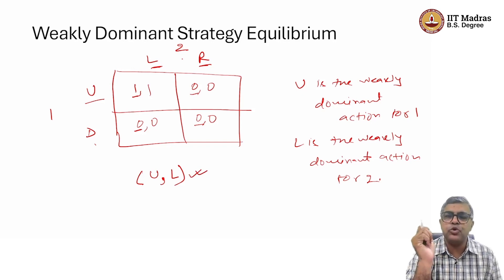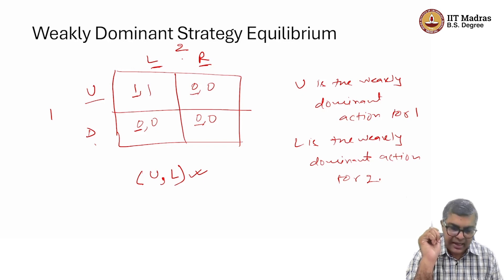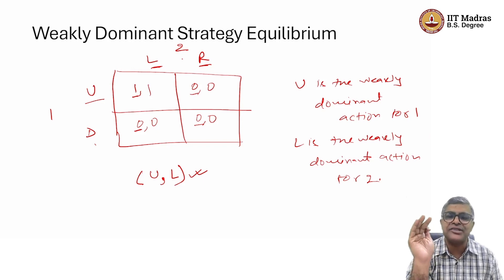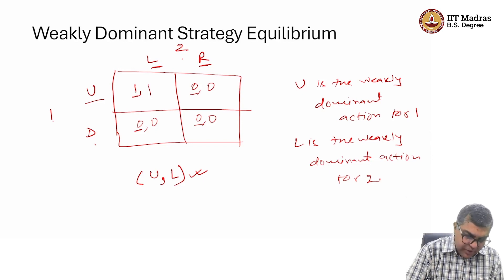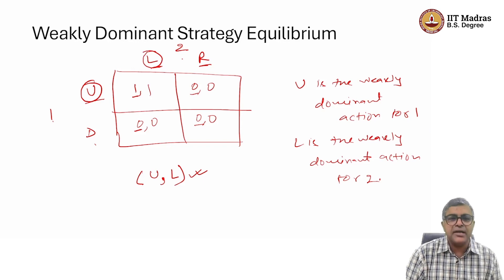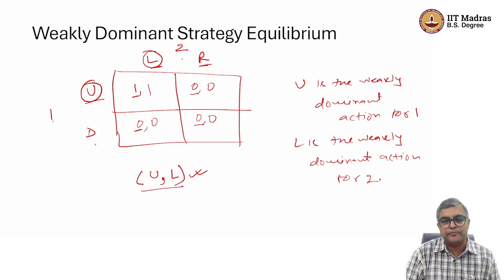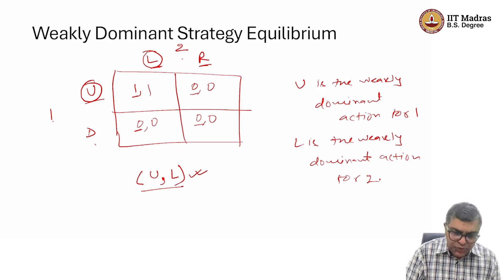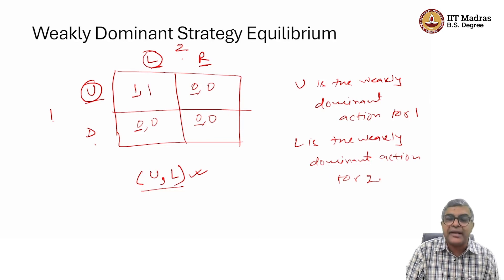Before we proceed further, we should note what kind of assumptions we have used to obtain these two equilibrium notions. We have used that players are rational, and we have not used common knowledge — we have only used that each player knows the structure of the game: who the players are, what strategies or actions they have, and what the payoffs are. Player 1 knows the game and figures out U is the weakly dominant strategy; player 2 knows the game and figures out L is the weakly dominant strategy; therefore player 1 plays U, player 2 plays L, and the outcome is (U, L). We have not used the further requirements of common knowledge so far. Also, when a player has a dominant strategy, it is going to be a unique dominant strategy — I want you to think about it and get back to me if you think that statement is not true.